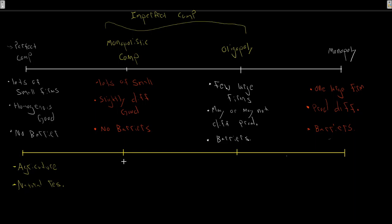Moving to monopolistic competition: this is going to be like our restaurants. Restaurants are a great example of monopolistically competitive firms. Think about our big fast food chains — McDonald's, Burger King, A&W, Wendy's. They all make burgers and offer burgers, fries, and soft drinks — the same kind of thing. Although we have lots of these firms, we have lots of these chains all offering a slightly differentiated good.